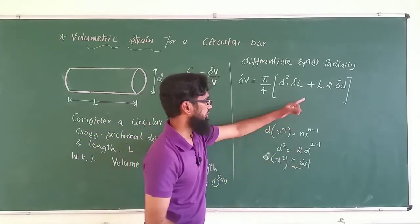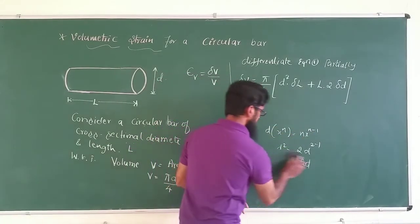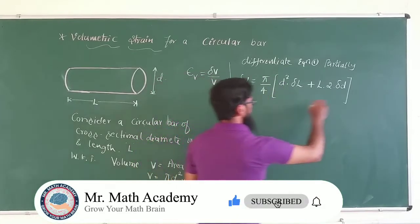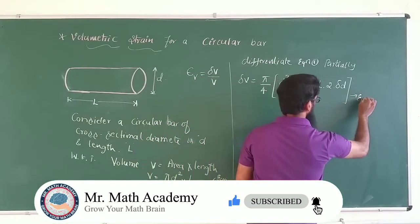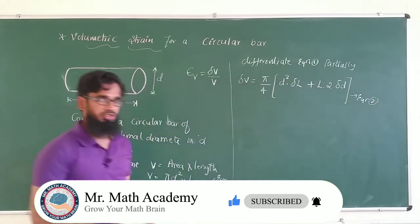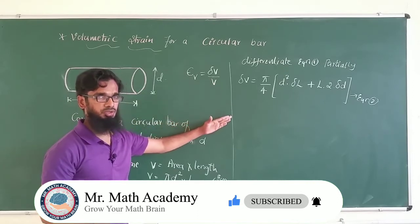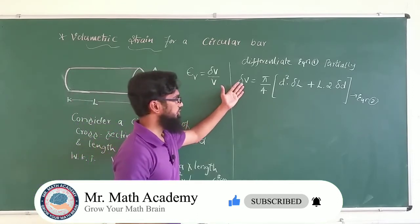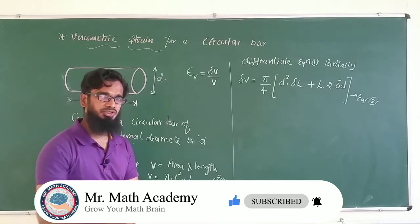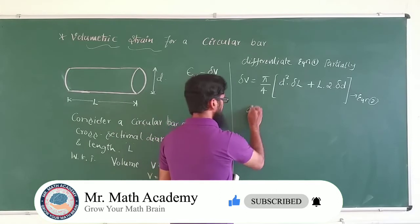So 2d gives us 2·δd because we are doing partial differentiation. Therefore δV = (π/4)(d²·δl + 2d·l·δd). Let us call this Equation 2. The volumetric strain is change in volume by original volume, so we have Equation 2 divided by Equation 1.